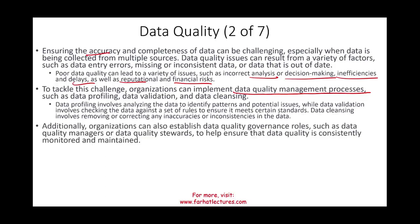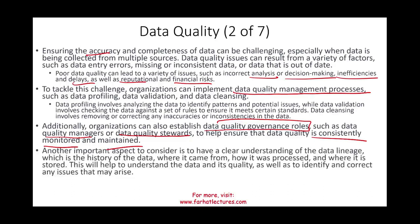Organizations can also establish data quality governance roles such as a data quality manager and data quality stewards to help ensure data quality is consistently monitored and maintained. Another important aspect is having a clear understanding of data lineage — meaning the history of the data: where it's coming from, what is the source, and where it is stored. This helps understand the data and its quality, and to identify and correct any issues. If we know the source, we can go back and verify the data.